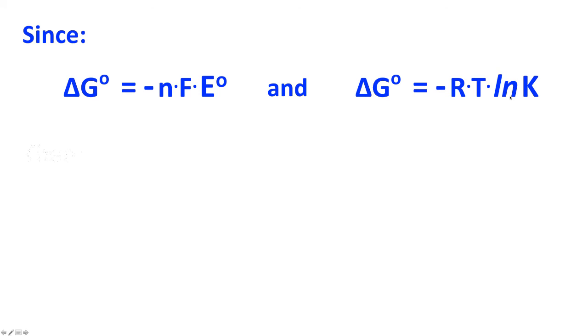And if we now move on and use this relationship, so delta G is equal to negative NFE. So if we're at standard conditions, then delta G naught equals negative NFE naught. So this is our new relationship between delta G and cell potential. And if we remember from thermodynamics that delta G naught is equal to negative RT ln of K, then since delta G naught equals negative NFE naught, and delta G naught also equals negative RT ln of K, we can equate those two things.